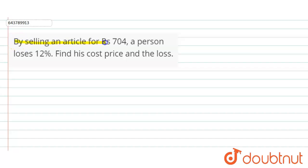By selling an article for rupee 704, a person loses 12%. Find his cost price and the loss.